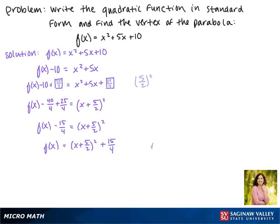Now remember, the standard form is f(x) = a(x - h)² + k, where the vertex is at (h, k). That makes the vertex in this case at (-5/2, 15/4).